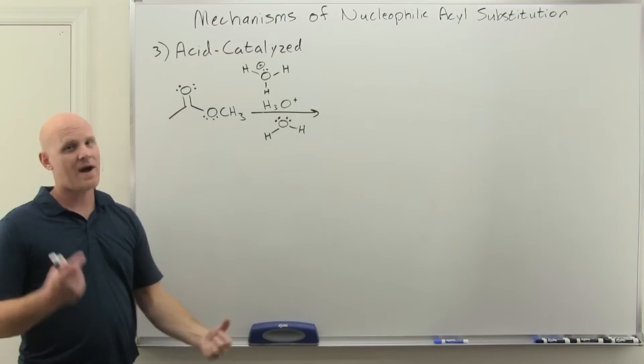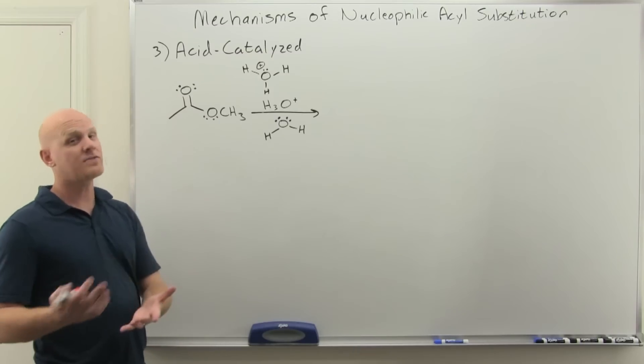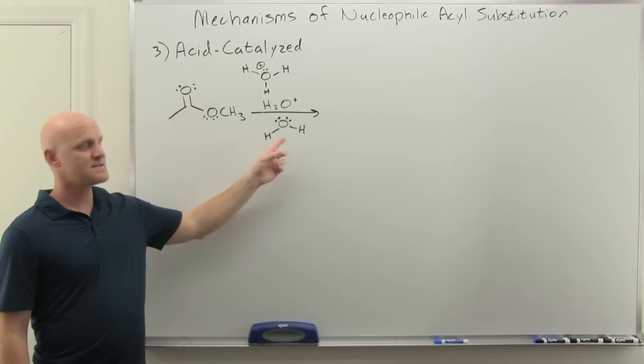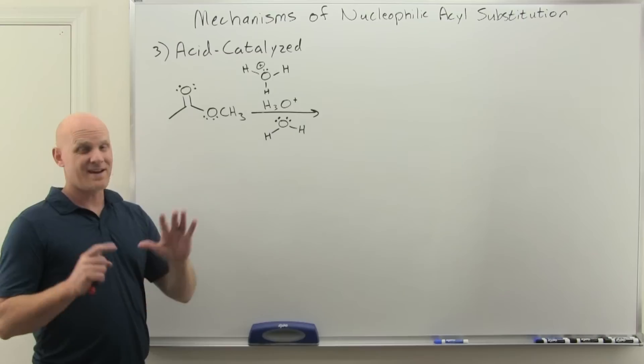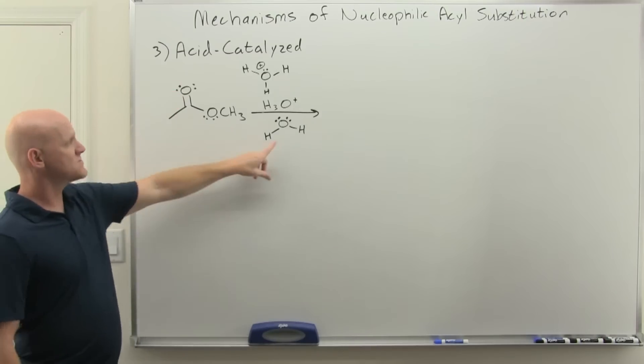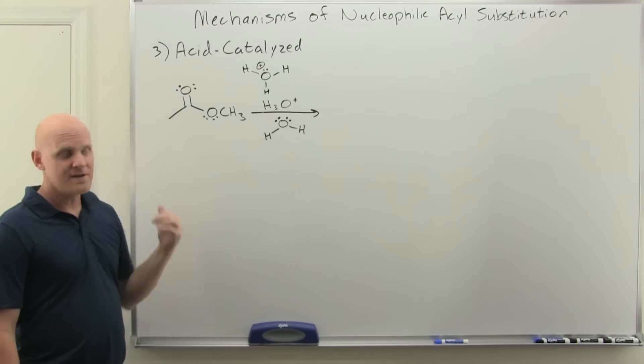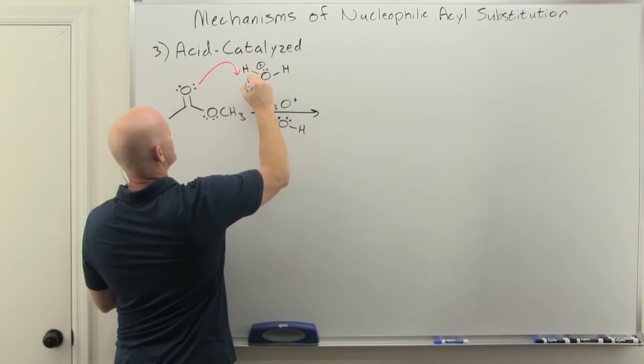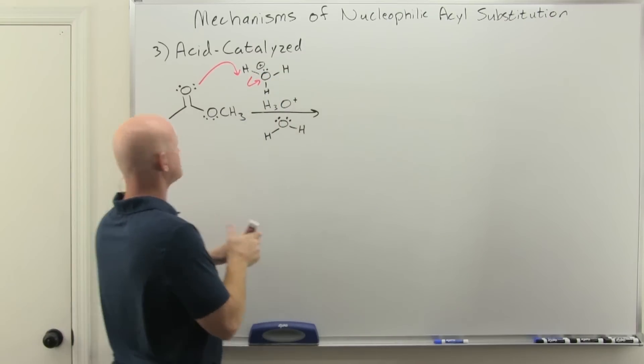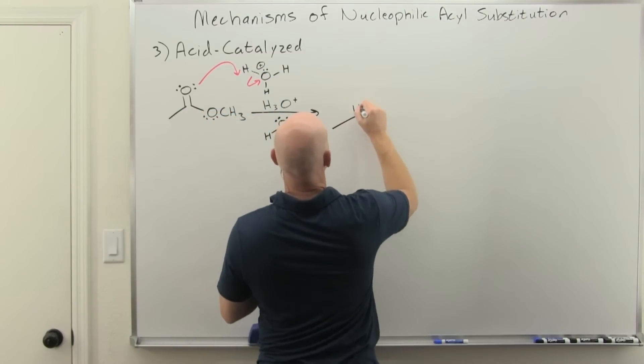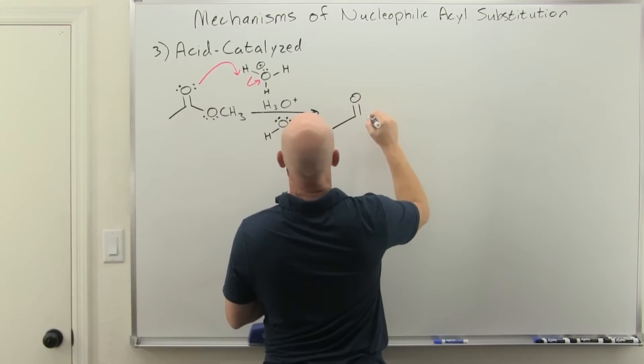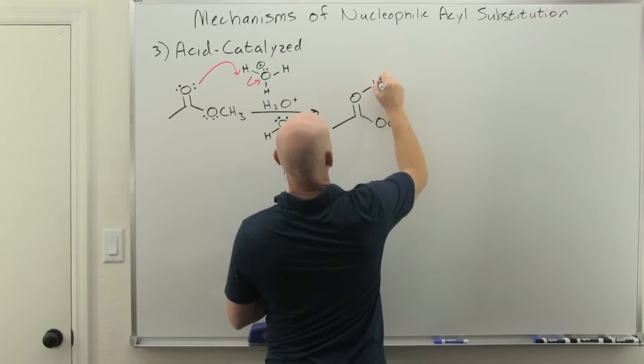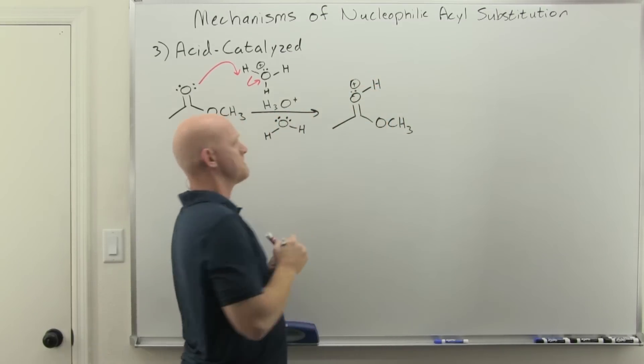But because we've got something less reactive, an ester in this case, we have to either do acid or base catalyzed. So I could have used methoxide and that would have been the base catalyzed mechanism. It would have been two steps and life would have been good. But in this case, we're doing acid catalyzed and it's again going to be six steps. In this case, water is not a good enough nucleophile to react with our ester. So it turns out what's going to happen first then is we're going to protonate the carbonyl oxygen of our ester.